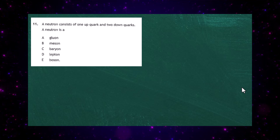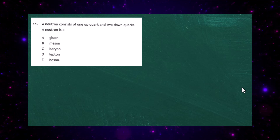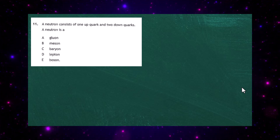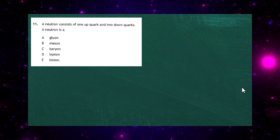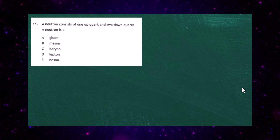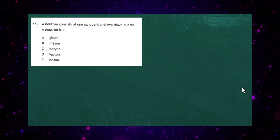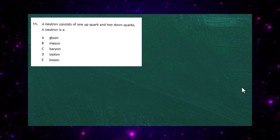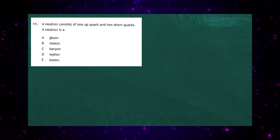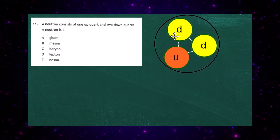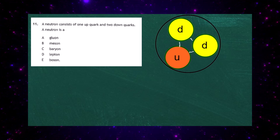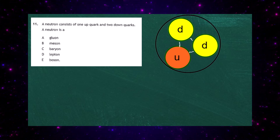Question 11 from Paper 1 of the 2023 SQA Higher Physics exam. A neutron consists of one up quark and two down quarks. A neutron has a down, a down, and an up — it's made up of three quarks.